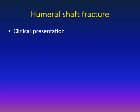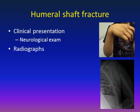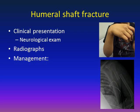Humeral shaft fracture: the clinical presentation is pain, swelling, and deformity of the affected arm. A thorough neurological exam is critical because the radial nerve runs very close to the humeral shaft and may be injured. Shown here is a child with radial nerve palsy presenting with wrist drop — he cannot raise his wrist due to radial nerve palsy. Radiographs show the fracture. Management requires orthopedic referral; most children can be managed non-operatively, but some may need surgical intervention.